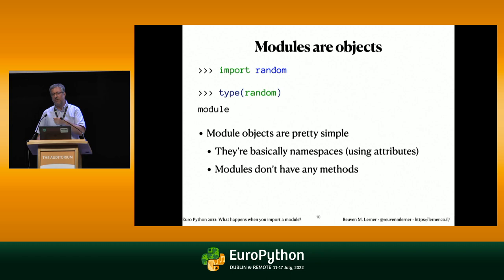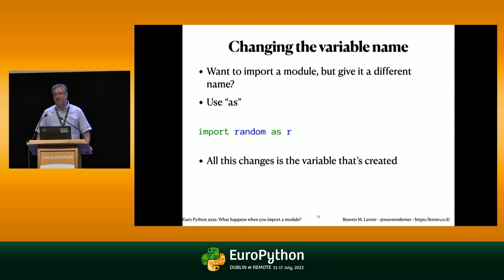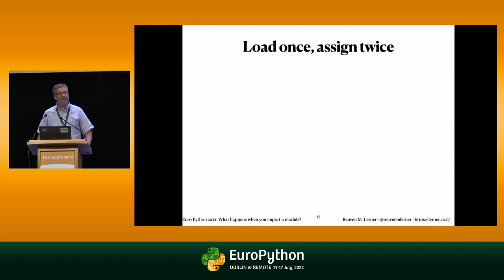What if I want to import a module and not use the same name as the module name? I can use 'import as'. I say 'import random as r'. The only thing this changes is the variable that's created — the rest still happens. Remember, two things happen when we use import: we create a module object and we assign it to a variable. Here, we're just assigning it to a different variable.